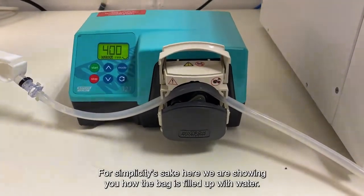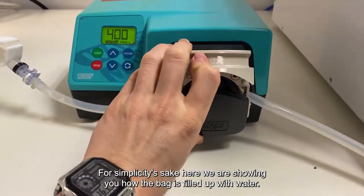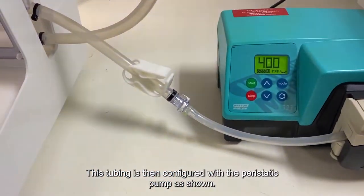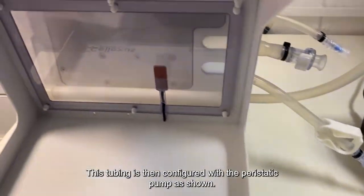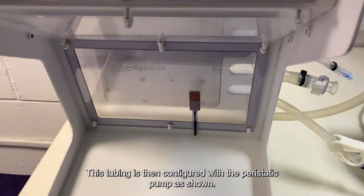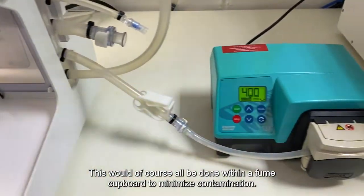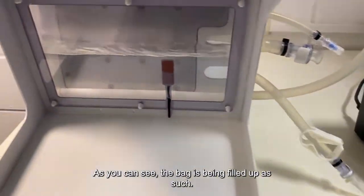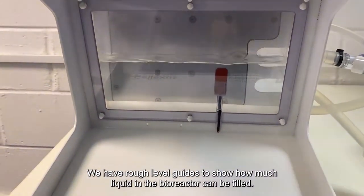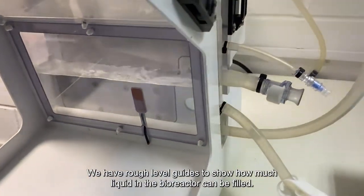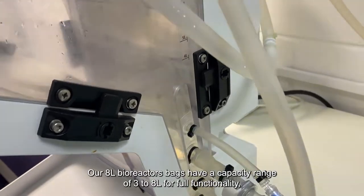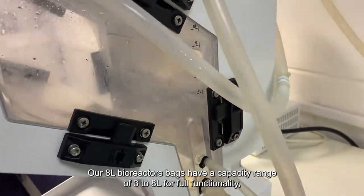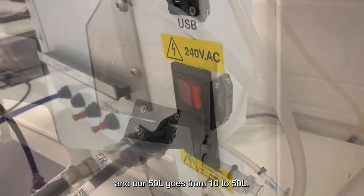For simplicity's sake, here we are showing how the bag is filled up with water. The tubing from the bag is connected from this female MPC connector. This tubing is then configured with the peristaltic pump as shown. This would of course all be done within a fume cover to minimise contamination. And as you can see, the bag is being filled up as such. We have rough level guides to show how much liquid in the bioreactor can be filled. Our 8 litre bioreactor bags have a capacity range of 3 to 8 litres for full functionality, and our 50 goes from 10 to 50 litres.